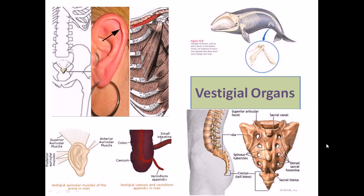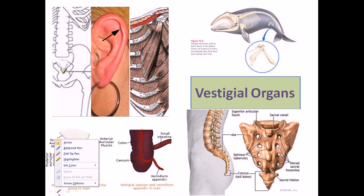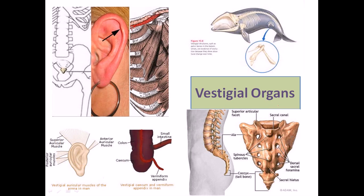Hello friends. In this video we are going to talk about vestigial organs and what we mean by vestigial organs. As the name suggests, vestigial means an organ which had functionality during evolutionary history but now the function of this organ is not established. These organs are rudimentary, non-functional organs which were well developed and functional in the ancestors of our evolution but not in us.